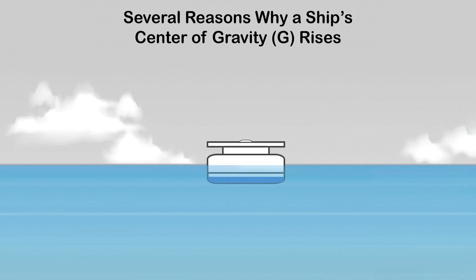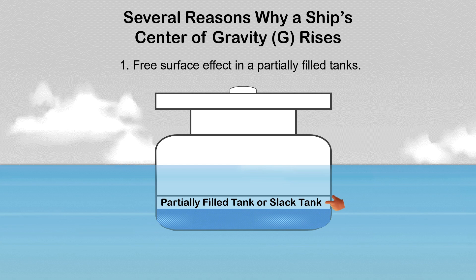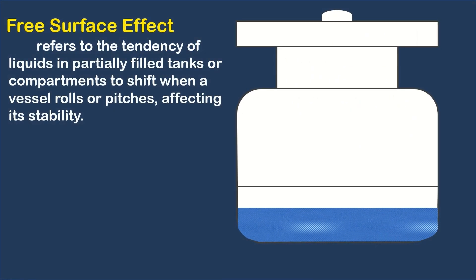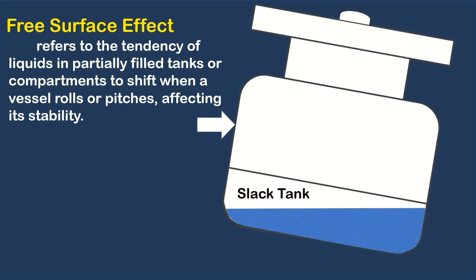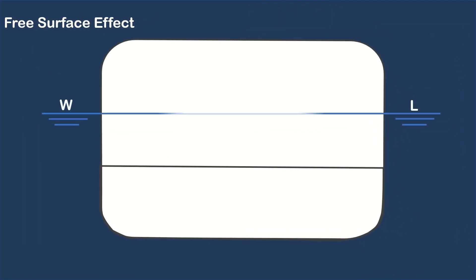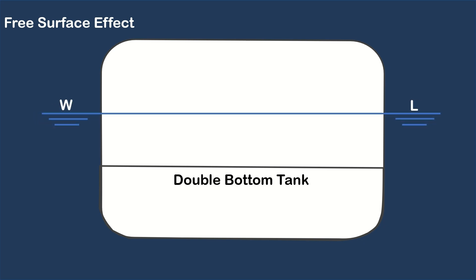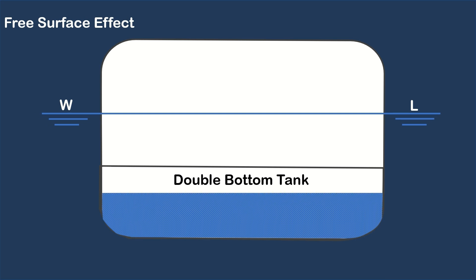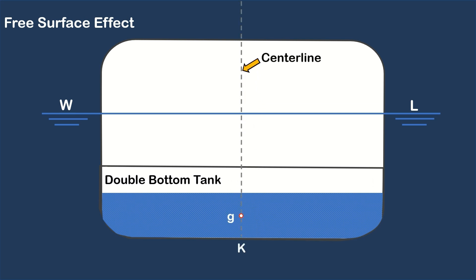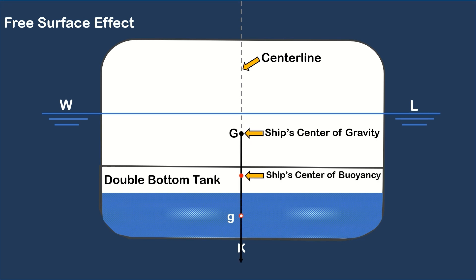One of these reasons is the free surface effect in partially filled tanks. Free surface effect refers to the tendency of liquids in partially filled tanks or compartments to shift when a vessel rolls or pitches, affecting its stability. If this is the ship's transverse section, let us assume that the ship is floating in still water at upright condition — this is the waterline. The double bottom tank is partially filled with water, and the center of gravity of the water inside the tank is marked with a small letter g. The geometrical center of the underwater volume is the center of buoyancy.